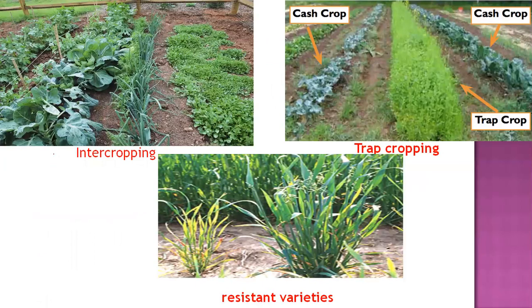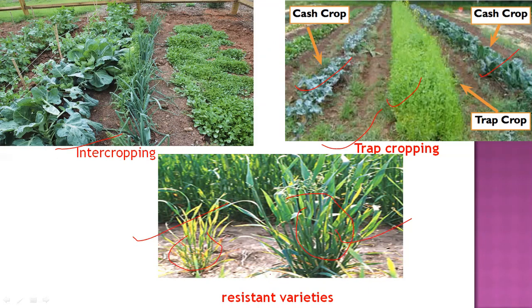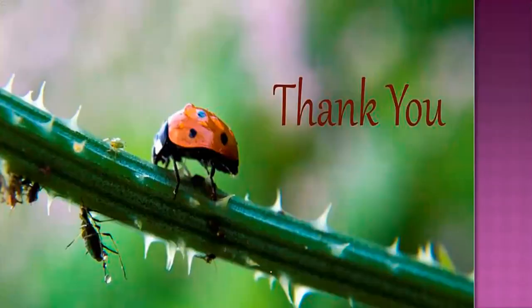Here we can see photographs showing intercropping, where multiple vegetables are grown together for maximum yield while also managing different pests. Trap cropping is shown with the main cash crop and trap crop controlling pests like the diamondback moth in cruciferous vegetables. An example of resistant versus susceptible varieties is shown — the resistant variety gives maximum yield while the susceptible variety shows high pest infestation with reduced yield. These are the different methods and practices under cultural control. Thank you very much. If anyone has doubts or queries, please ask or message me.